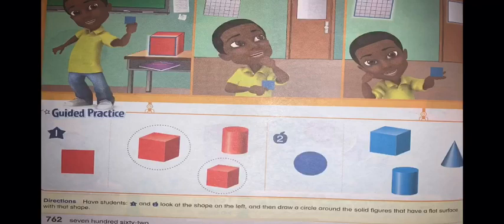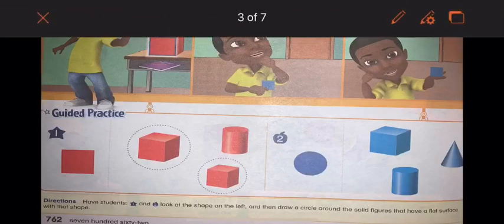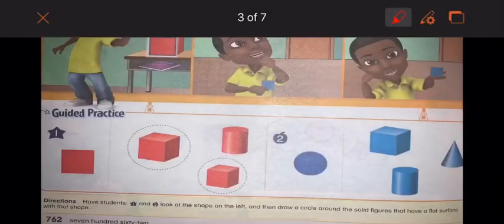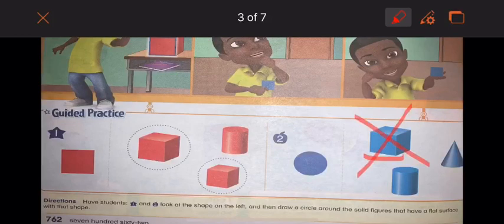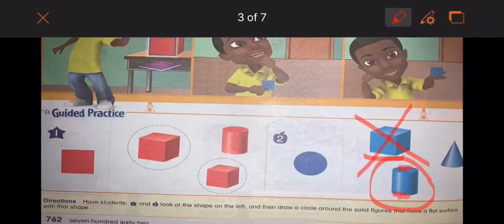They're asking me to circle the solid figures that have this flat surface. When I look at the cube, does it have a circle as a flat surface? No it does not. When I look at the cylinder, yes it does. It has two circles, two flat circles. When I look at the cone, yes it does as well. It has one flat circle.